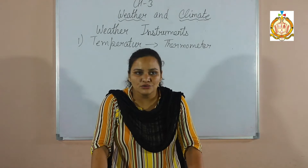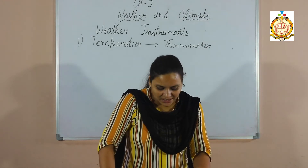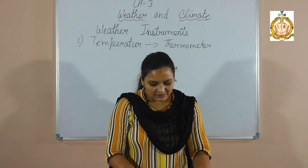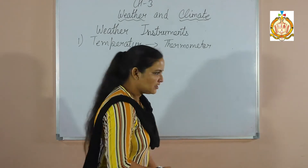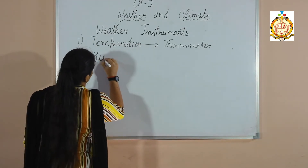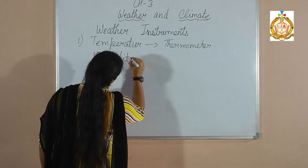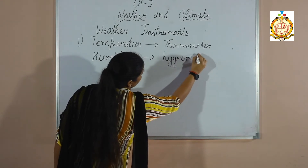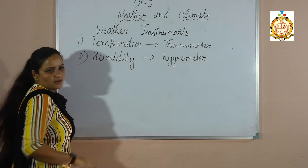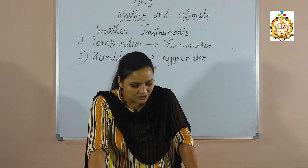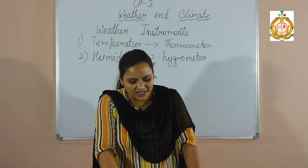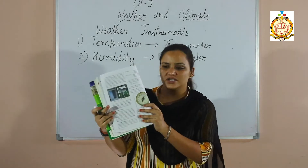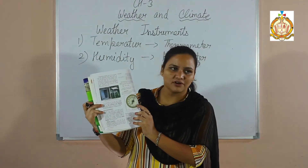Next, measuring humidity — how we can measure humidity. It can be measured through the measuring unit grams per cubic meter. For this, we are using the instrument hygrometer. Hygrometer is the instrument used for measuring relative humidity. It measures the water vapor in the atmosphere. The picture of the hygrometer is given on page number 30.